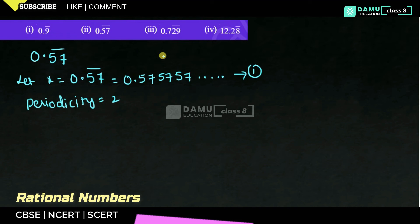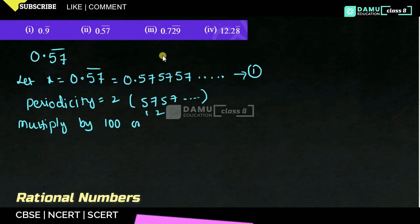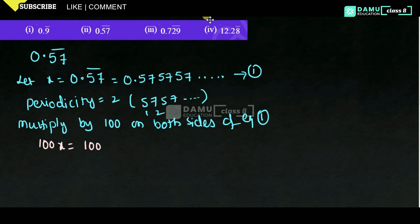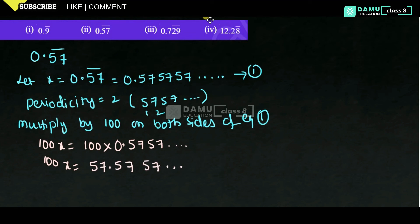Periodicity means the number of digits repeating. 57 is repeating — that is 2 digits. Then, multiply by 100 on both sides of equation 1. If you multiply, what you will get is 100x equal to 100 into 0.5757... So, 100x will be equal to 57.5757... Let's call this equation 2.